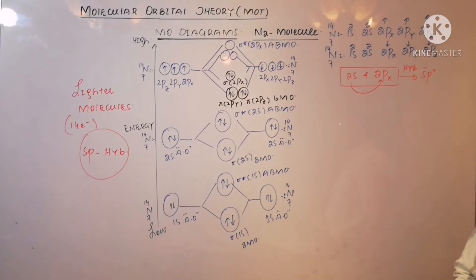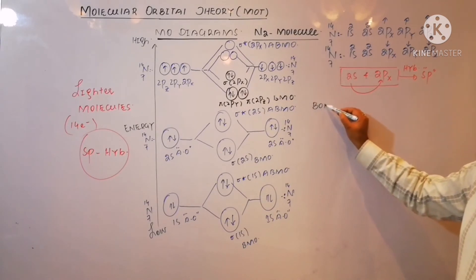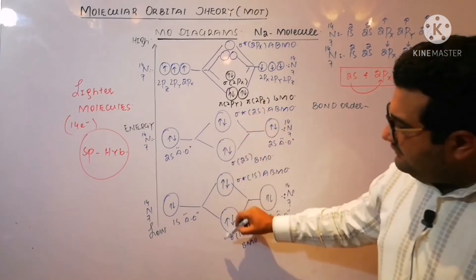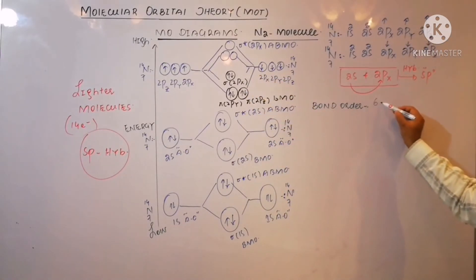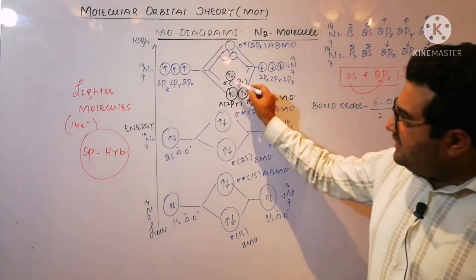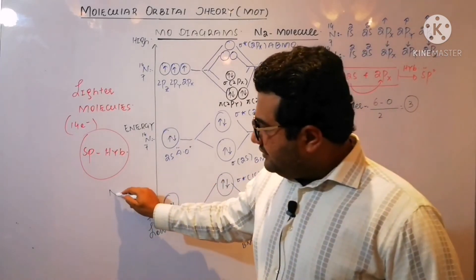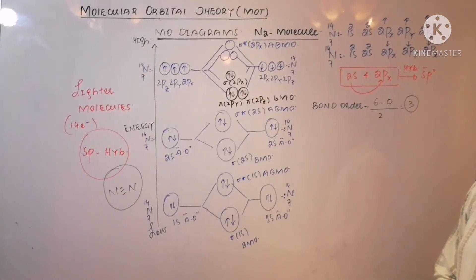Now what will be its bond order? Because these are completely filled, they will not take part, so total 6 minus 0 over 2—because these 6 electrons are present in bonding molecular orbital—that will be 3. And you know, between 2 nitrogen atoms there are 3 covalent bonds, so its bond order is 3.